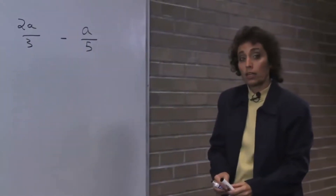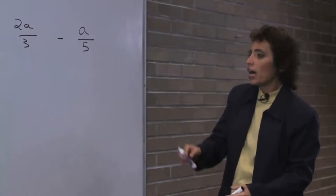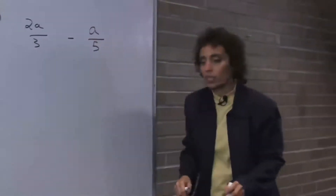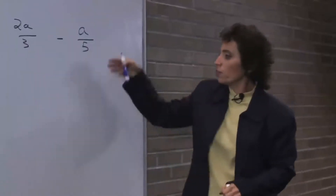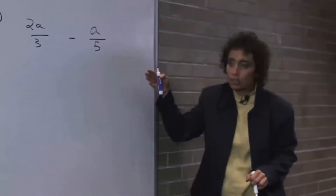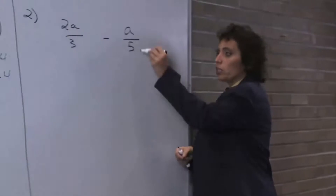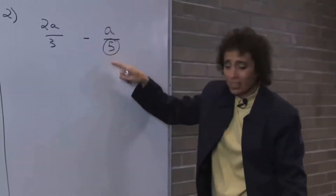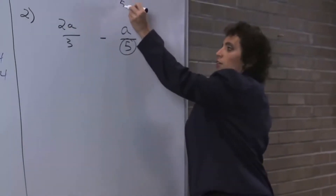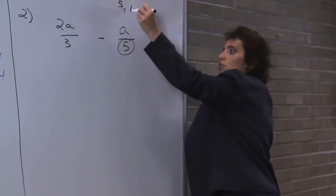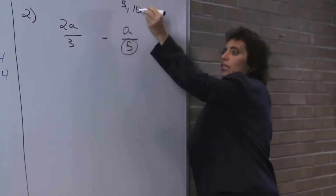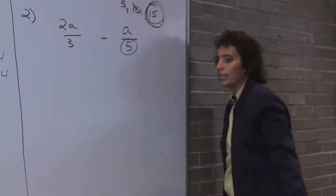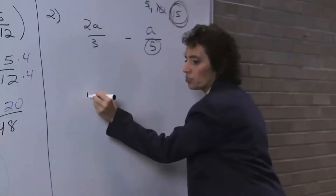How did that go? Alright. No double signs — don't forget. Look for an LCD — there's no LCD, so now we need to find one. We look at the biggest number: does 3 go into 5 without a remainder? It does not. So we take multiples of 5. 5 was no good. 10 — 3 does not go into 10. 15 — and we found the winner. So the LCD is 15.